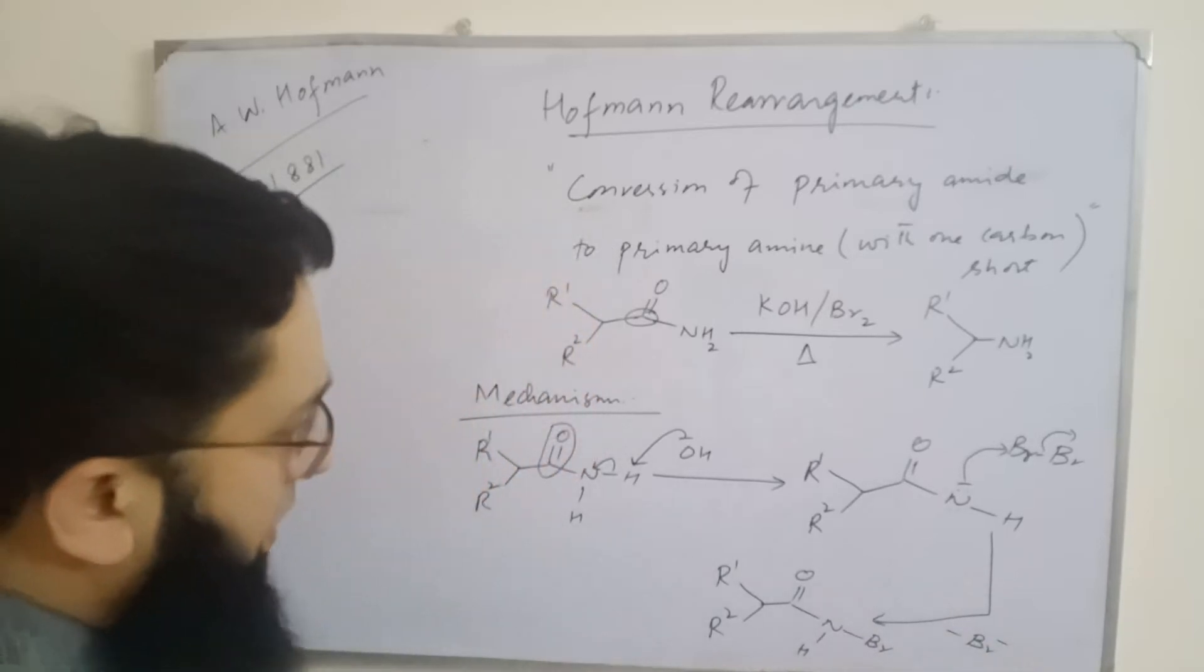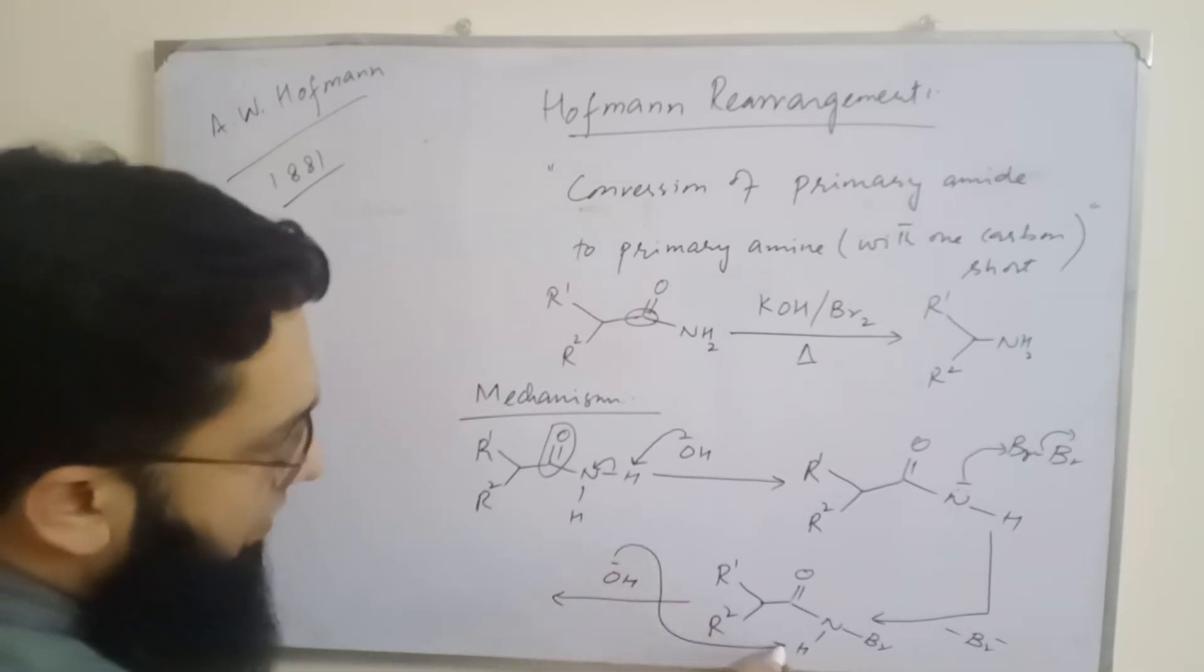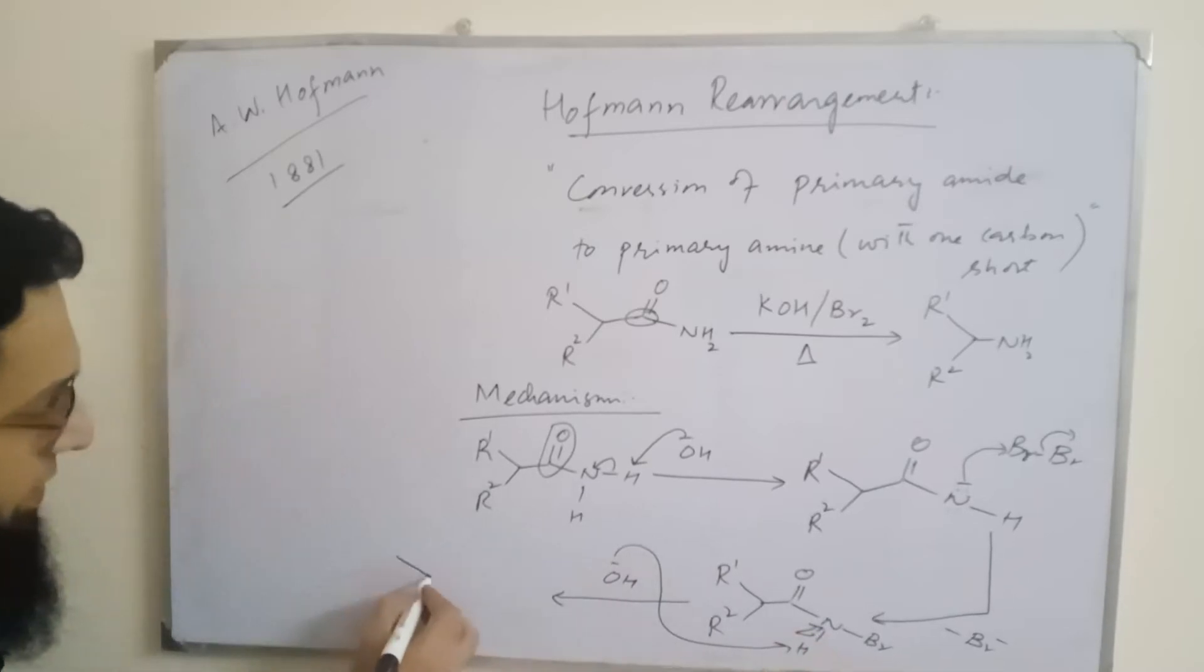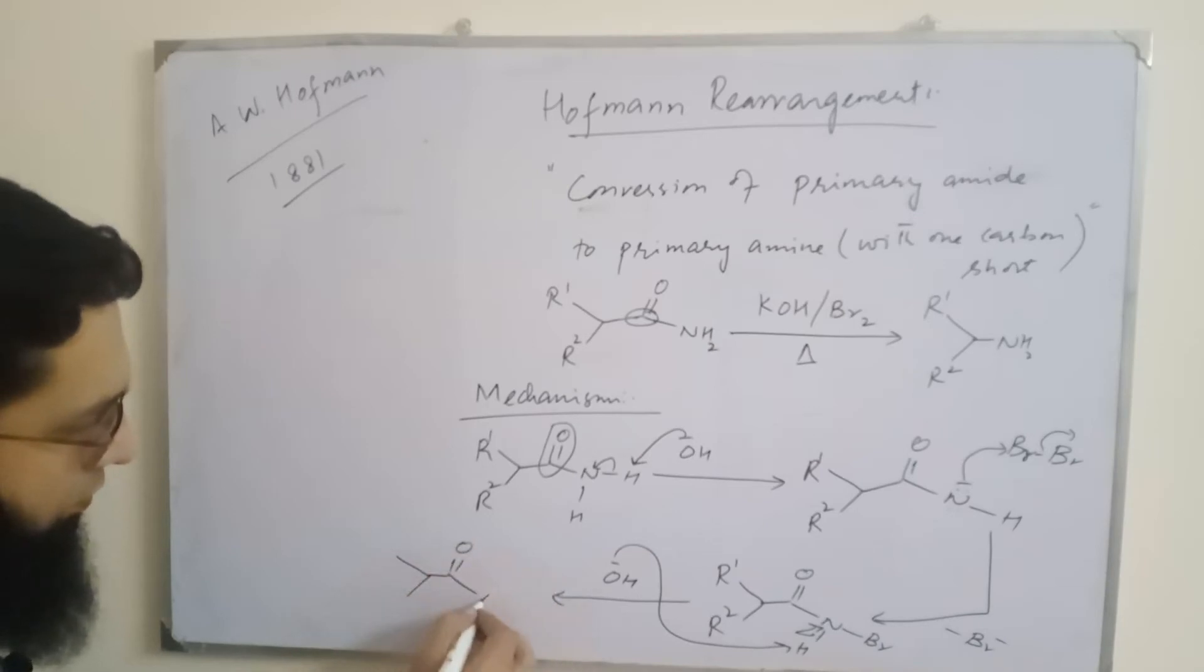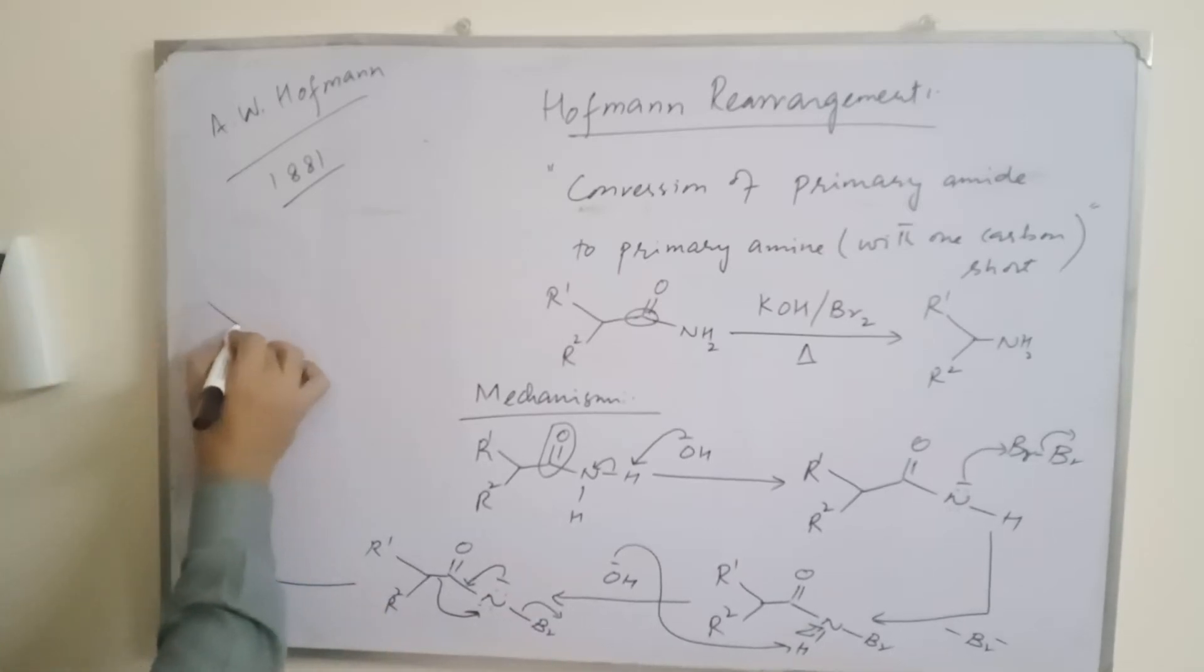Again, base is present in the system, so hydroxide takes the second proton. As a result, we get this nitrogen intermediate. This nitrogen is unstable, so this bond shifts towards nitrogen, the electrons move here, and Br is eliminated. As a result, this isocyanate is formed.